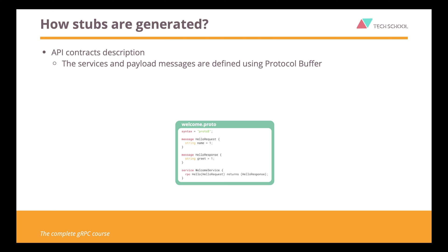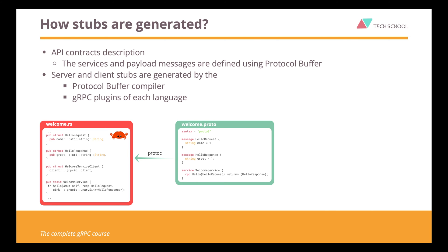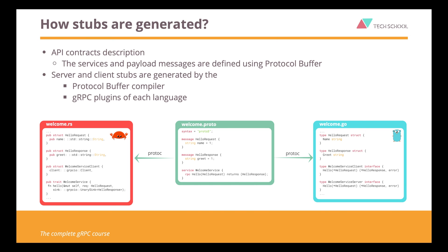We will learn much more detail about this later in the hands-on with protocol buffer lecture. From this proto file, the server and client stub codes are generated by the protocol buffer compiler, or protoc. Depending on the programming language, we will have to tell the compiler to use the correct gRPC plugin for it. The generated code for Rust and Go will look something like this.